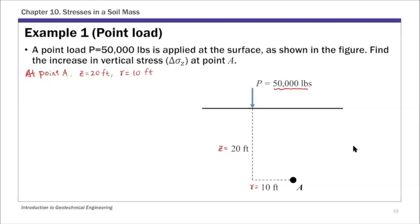And then this R over Z ratio. The R over Z ratio is 0.5, which is 10 over 20.